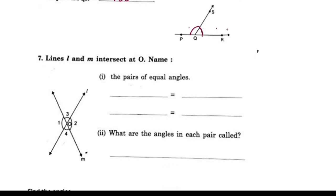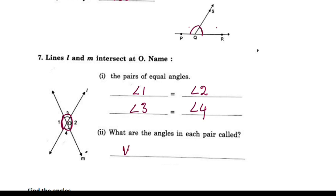Next: lines L and M intersect at O. Name the pairs of equal angles and the pairs of linear pair angles. When two lines intersect at O, angle 1 equals angle 3 and angle 2 equals angle 4 as vertically opposite angles. The angles in each pair are called vertically opposite angles.